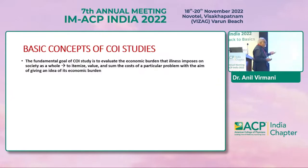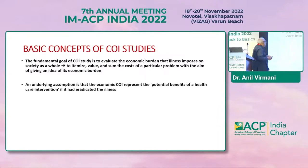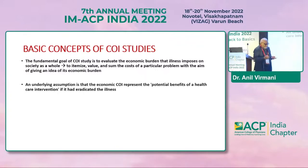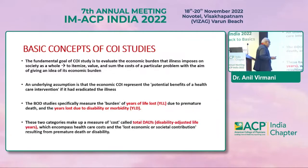Cost of illness studies evaluate the economic burden that an illness imposes on society as a whole. They itemize and value some of the costs of a particular problem with the aim of quantifying the economic burden. The underlying assumption is that this represents the potential benefits of a healthcare intervention if it can eradicate the illness. It also measures the burden of years of life lost due to premature death and years lost due to disability or morbidity — these two categories, as discussed, are the disability-adjusted life years.